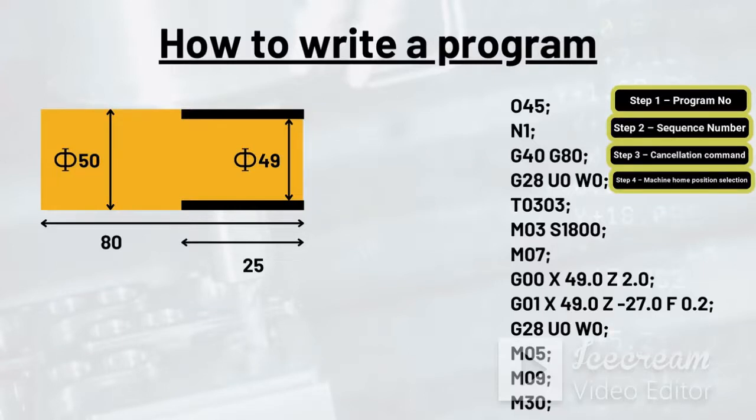The next step is called machine home position selection. Our workpiece here has 50 units diameter. We have to make it 49 units for a span of 25 units from one end. Let's say our tool holder has four tools mounted, namely one, two, three, and four. If we need to select one particular tool to carry out the operation, we need to select machine home position first so as to give tool change command. This is however not required if the tool facing the workpiece is the desired one.